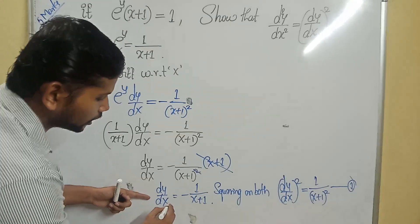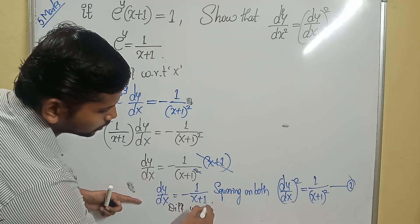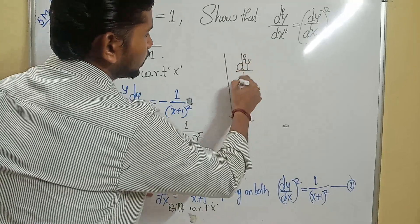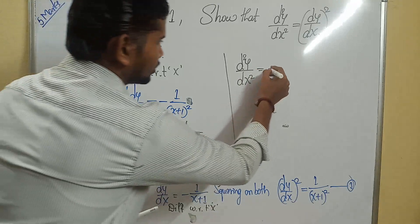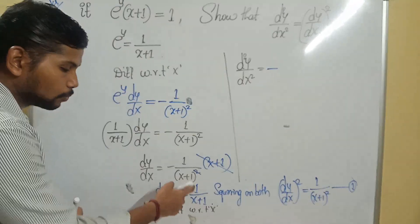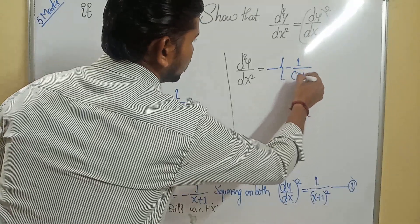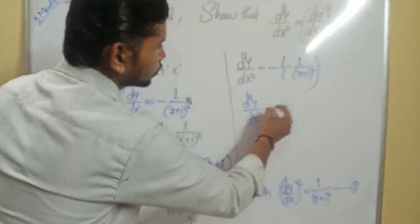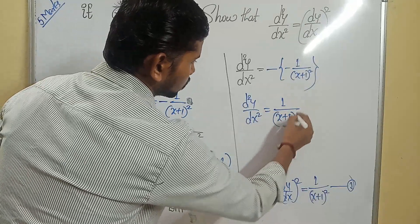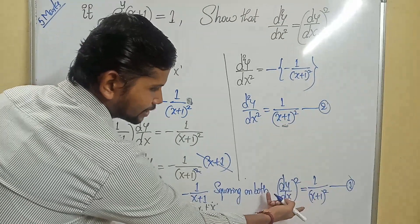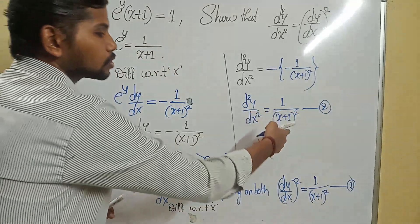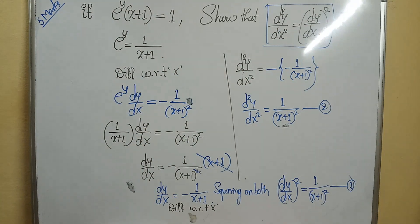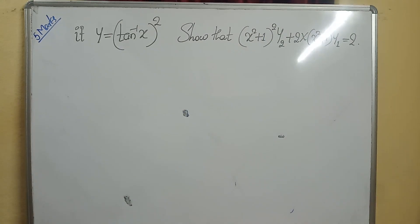Now differentiating dy/dx = −1/(x+1) again with respect to x: d²y/dx² = −·(−1/(x+1)²) = 1/(x+1)² — call this equation (2). Comparing equation (1) and equation (2): d²y/dx² = (dy/dx)². The required result is proved.